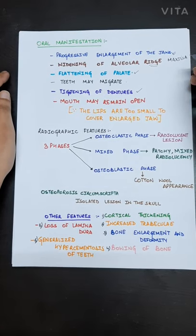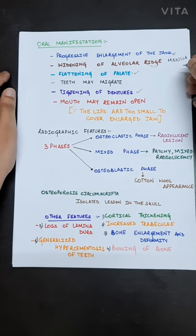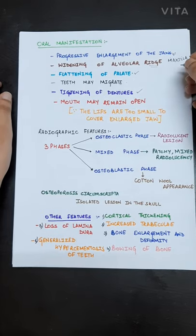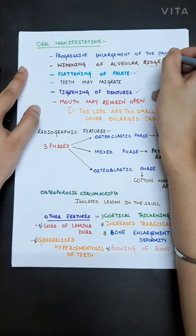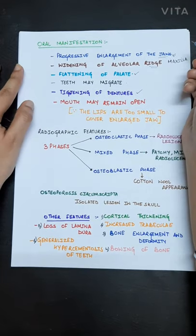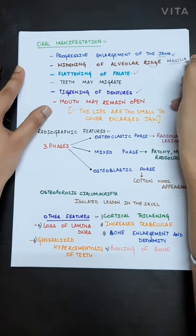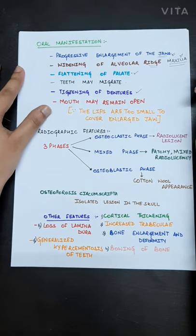Now, the oral manifestations of Paget's disease. As we know it is a progressive disease, there is progressive enlargement of the jaws. Maxilla and mandible both are involved but maxilla is more commonly involved in Paget's disease.